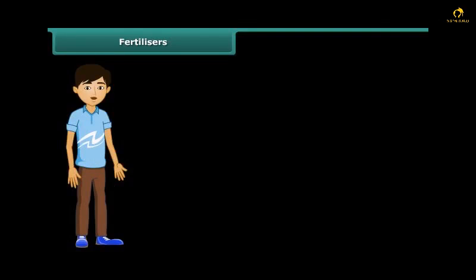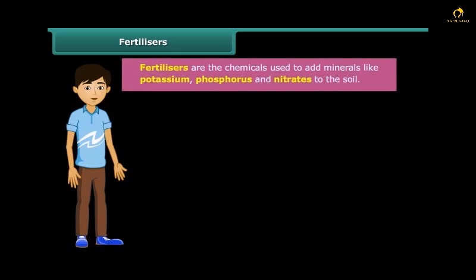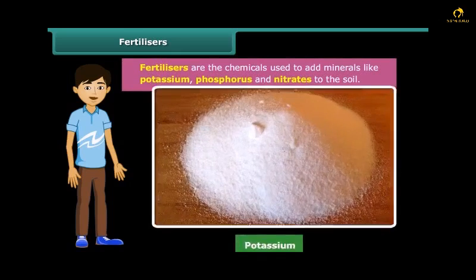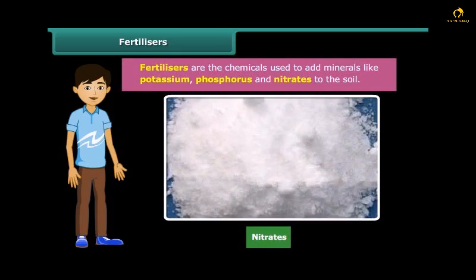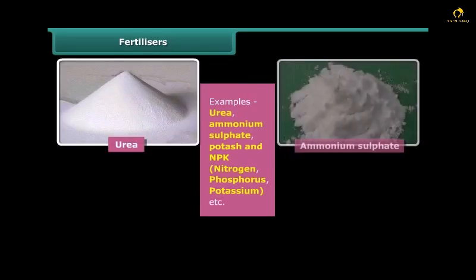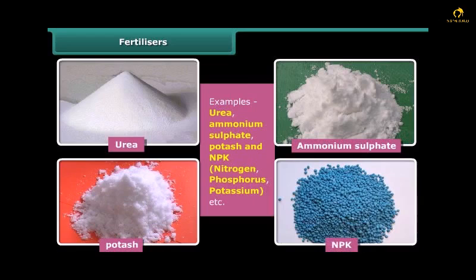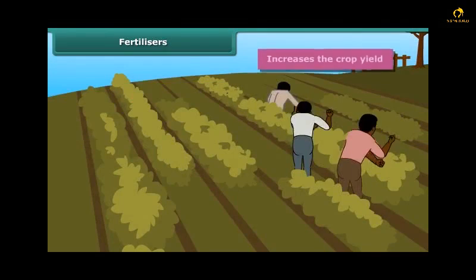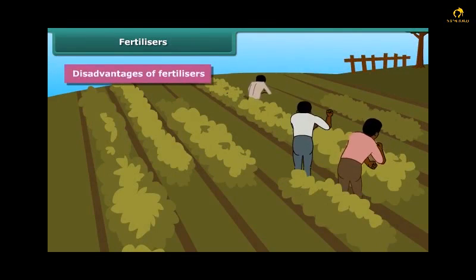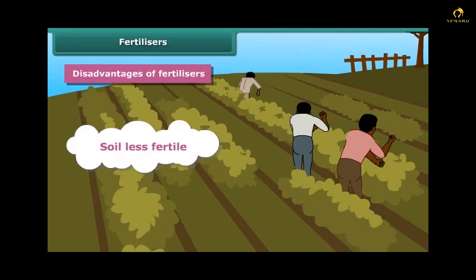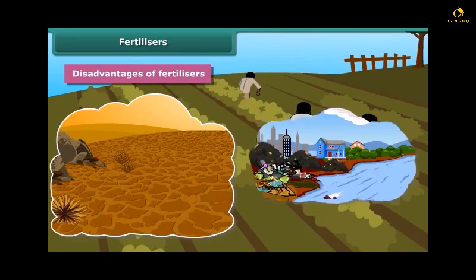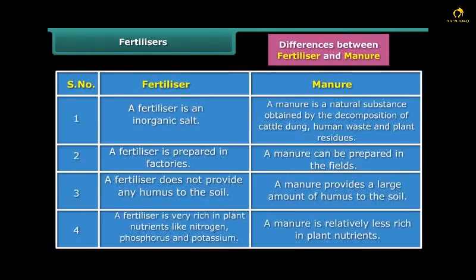Like manure, fertilizers are also used to replenish lost nutrients and minerals in the soil. Fertilizers are chemicals used to add minerals like potassium, phosphorus, and nitrates to the soil, and are produced in factories. Examples include urea, ammonium sulfate, potash, and NPK (nitrogen, phosphorus, and potassium). The use of fertilizers increases crop yield. However, excessive use of fertilizers makes the soil less fertile and has become a source of water pollution.